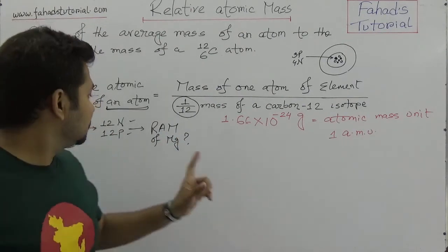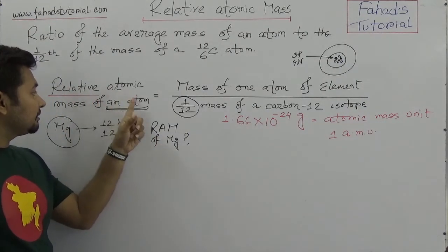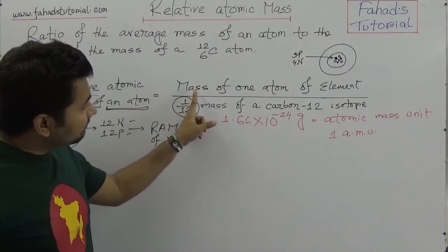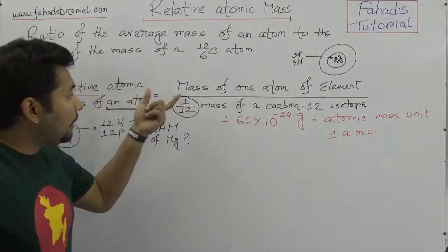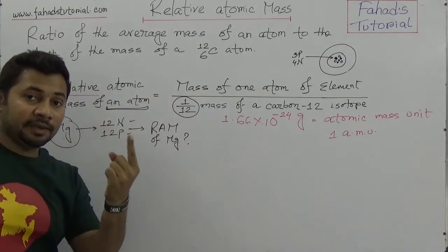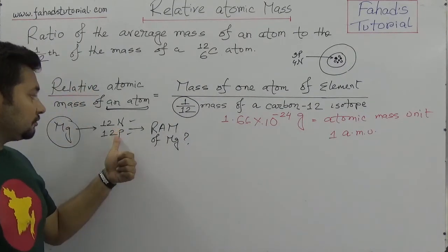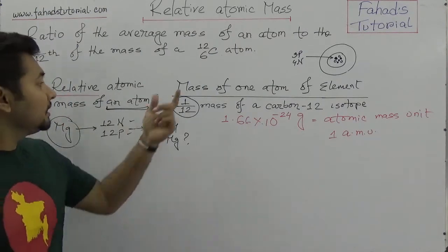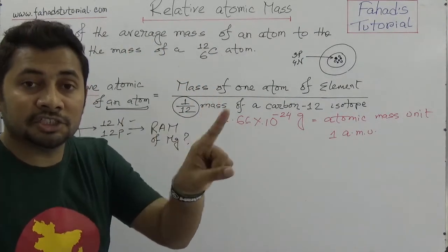How do you find the relative atomic mass of magnesium? We need to find out the mass of one atom of the element. So in one magnesium atom, as given here, there are twelve protons and twelve neutrons. How do I calculate the mass of one magnesium atom?